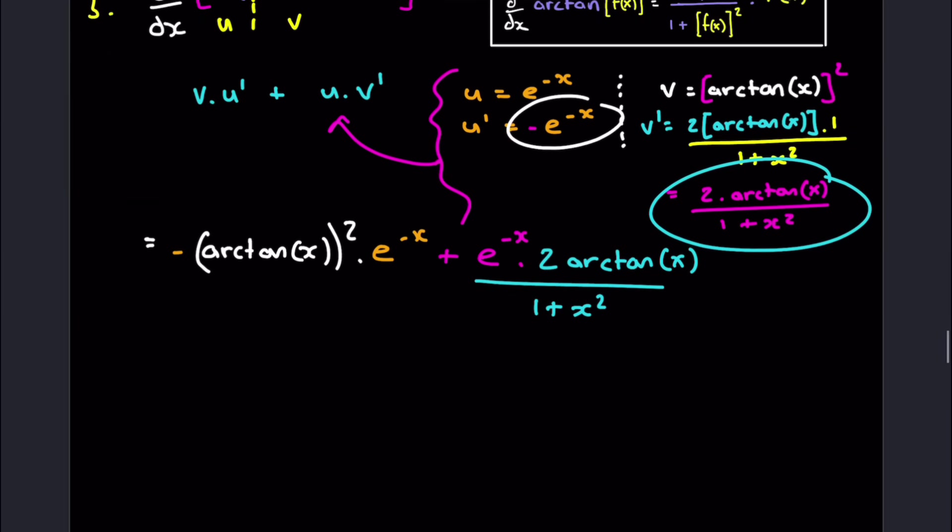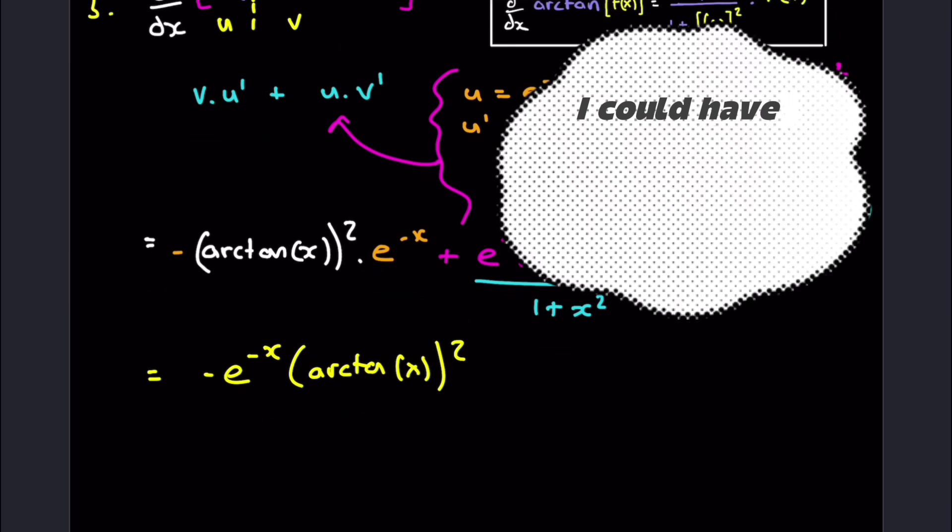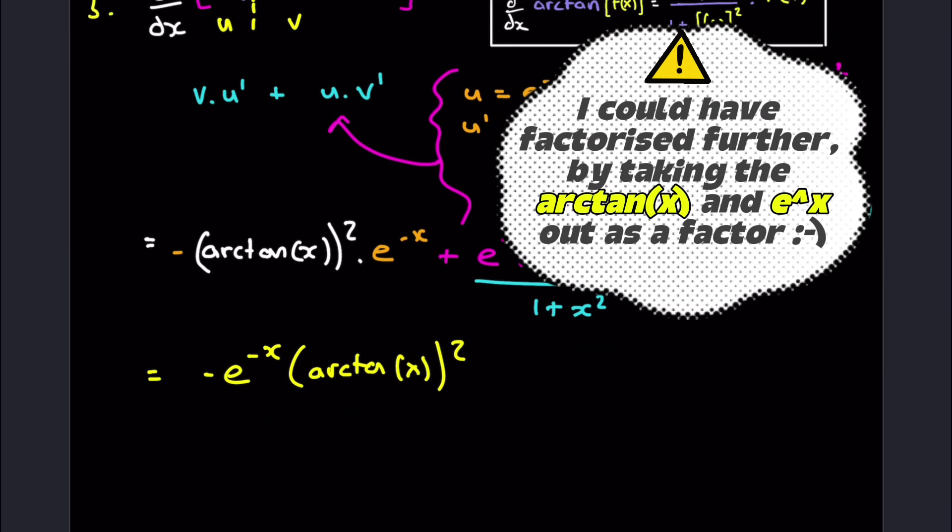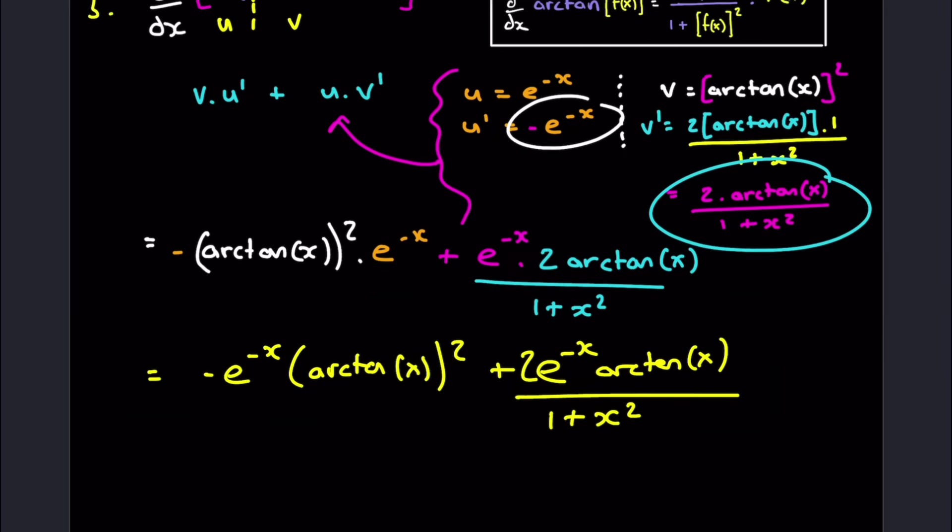So it's good practice to just simply just bring like any sort of negatives or exponents to the front. So we're going to have minus e to the minus x, and this is arc tan x all squared. Now we could factor out that if we wanted to. Then we've got plus 2e to the minus x arc tan x all over 1 plus x squared. And that is the end of question 3.